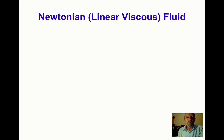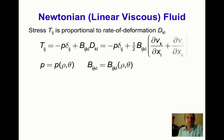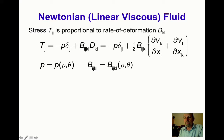Recall that for a Newtonian linear viscous fluid, the stress T_ij is proportional to the rate of deformation tensor D_kl. We can write that T_ij equals minus P delta_ij plus B_ijkl times D_kl, or substituting for the rate of deformation tensor in terms of velocity gradients: minus P delta_ij plus one-half B_ijkl times (del V_k / del x_l + del V_l / del x_k).